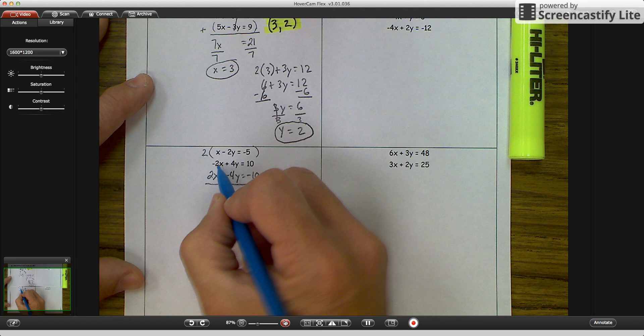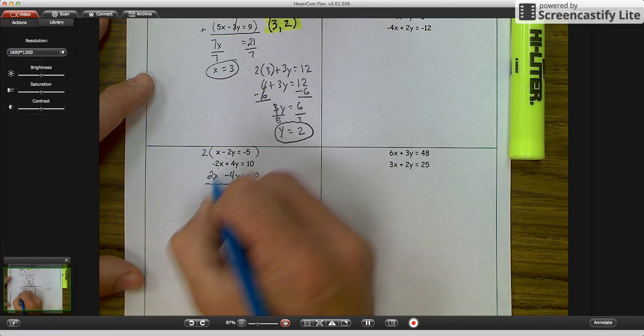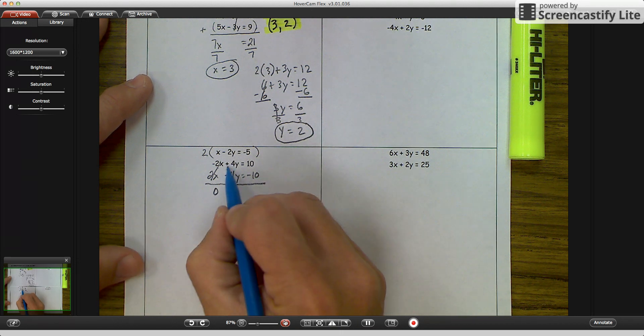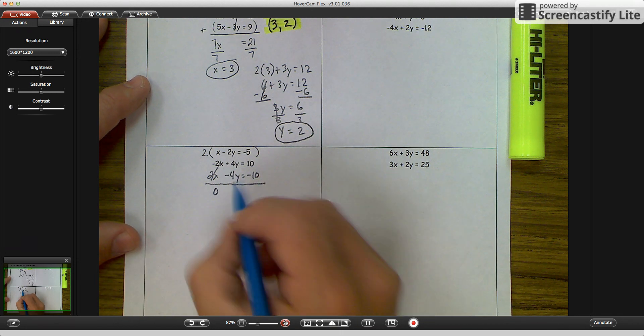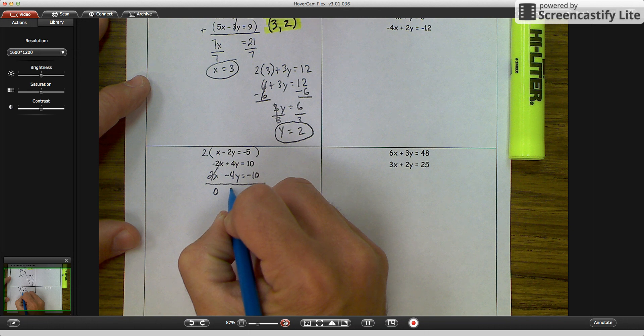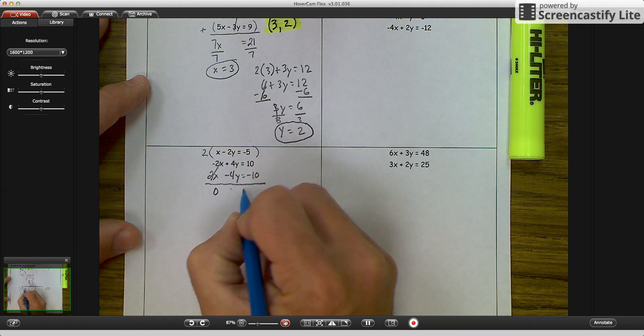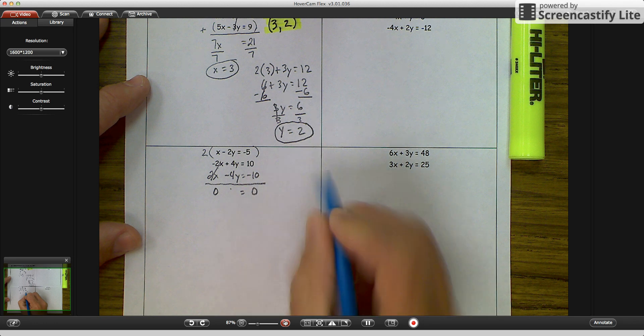So now let's eliminate. So I have negative 2x, positive 2x. And those eliminate. So that gives me a 0. And then I have, ooh, I have a positive 4y and a negative 4y. That gives me a 0. And then we have a positive 10 and a negative 10. And that gives me a 0.